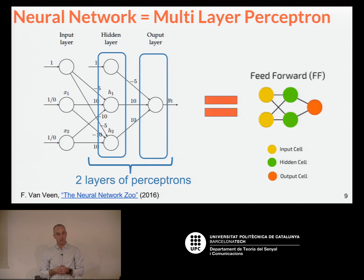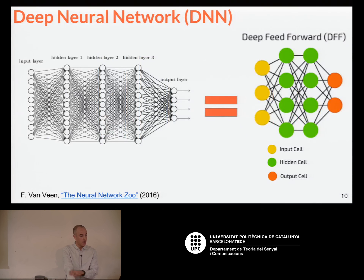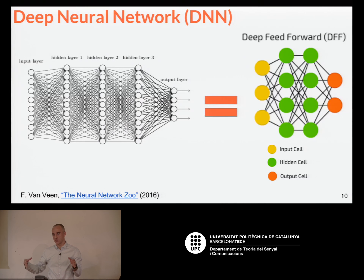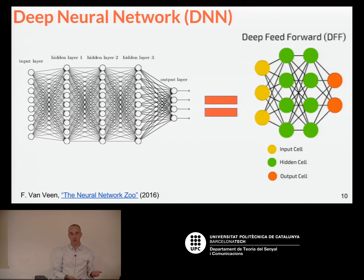What happens when you make things a bit more complicated? You start adding layers, then you have the multi-layer perceptron — that's something Santi already explained. Here you have three layers. And if you start adding more and more layers, that's when deep learning arrives. You go deeper and deeper, and that also means more parameters. Training and estimating these parameters will require more data, more time, and more computation.